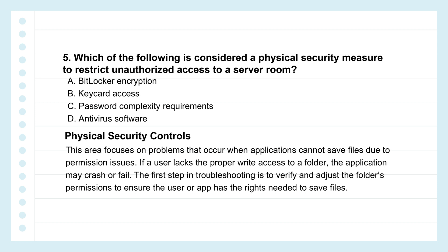Let's switch to physical security. Server rooms need to keep unauthorized people out. Which is a physical security measure? Options: A, BitLocker encryption; B, keycard access; C, password complexity; D, antivirus software. BitLocker encrypts data but doesn't stop someone walking in. Password complexity controls logical logins, not physical entry. Antivirus protects against digital threats, not physical ones. Keycard access is a direct physical control — you swipe the card, and the door unlocks or doesn't if you're not authorized. The key insight is clearly separating physical barriers from digital or data protection methods. You need both working together.